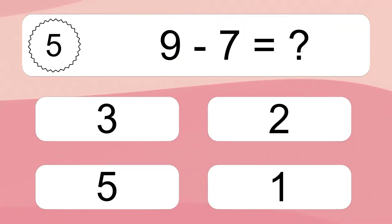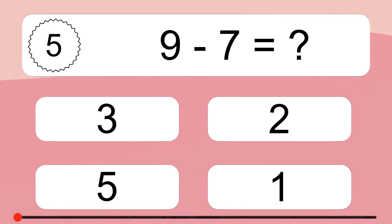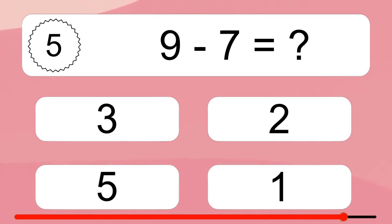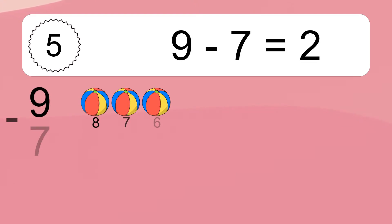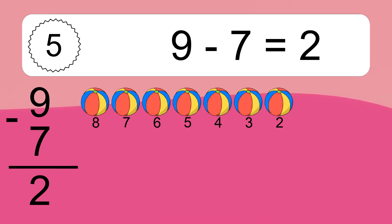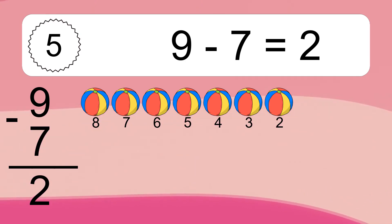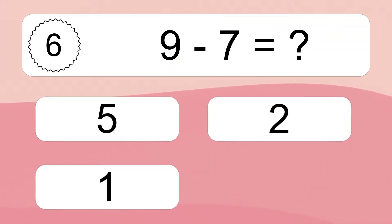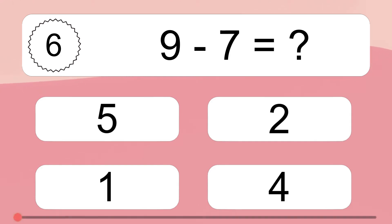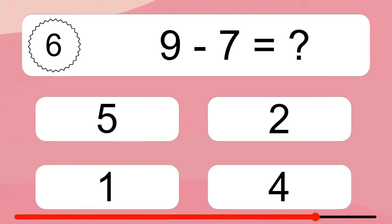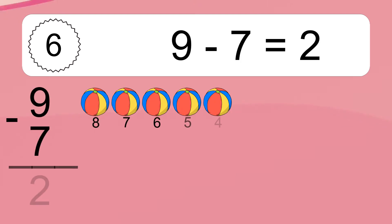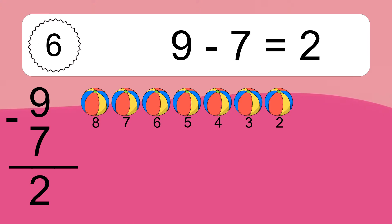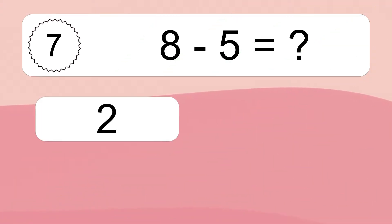9 minus 7 equals what? 9 minus 7 equals 2. Let's count it: 8, 7, 6, 5, 4, 3, 2. 8 minus 5 equals what?